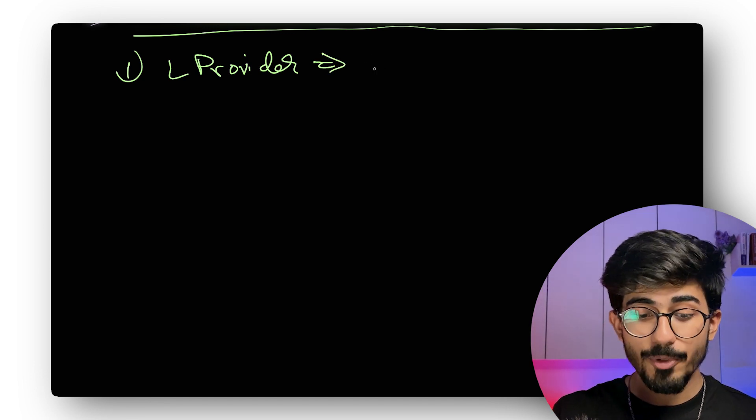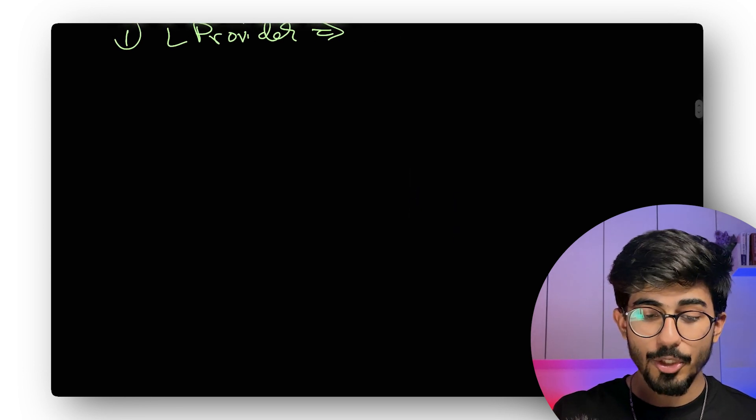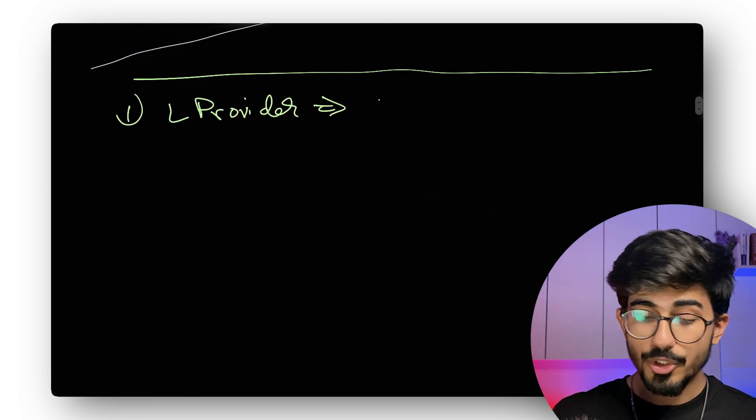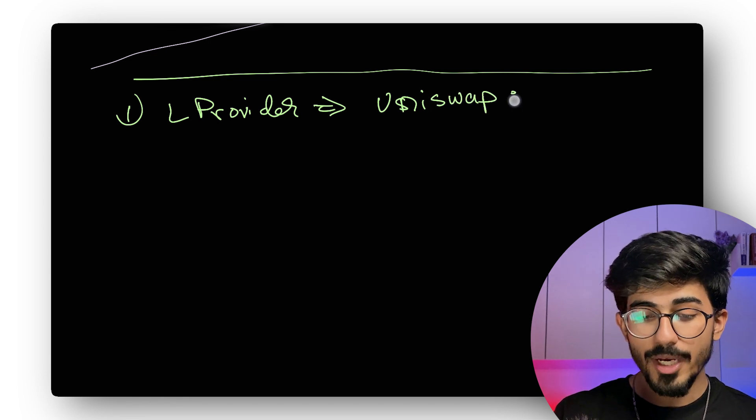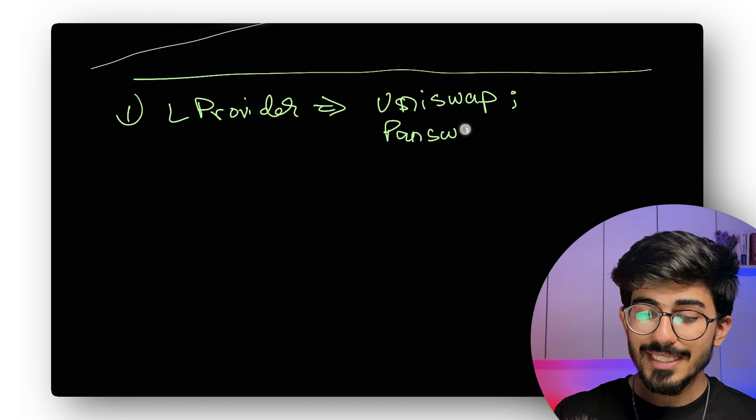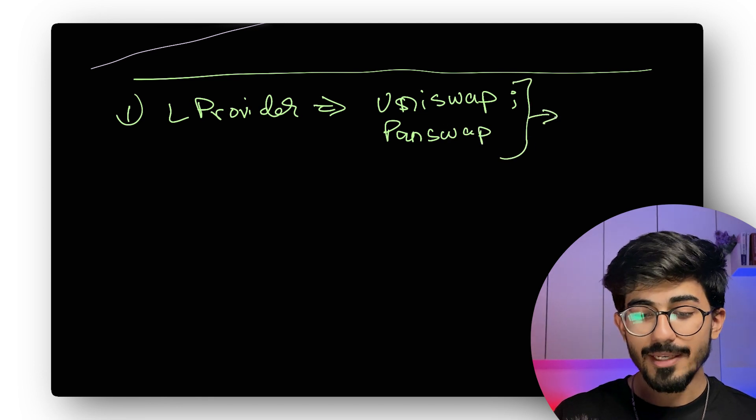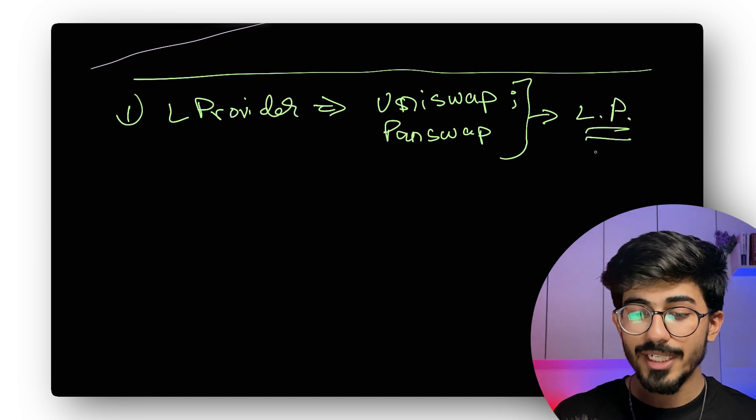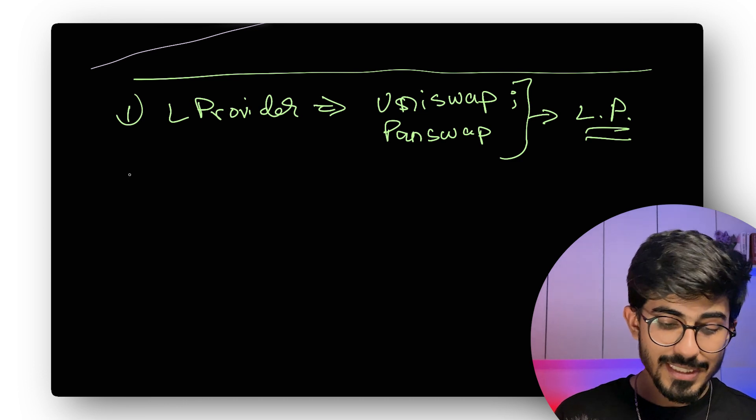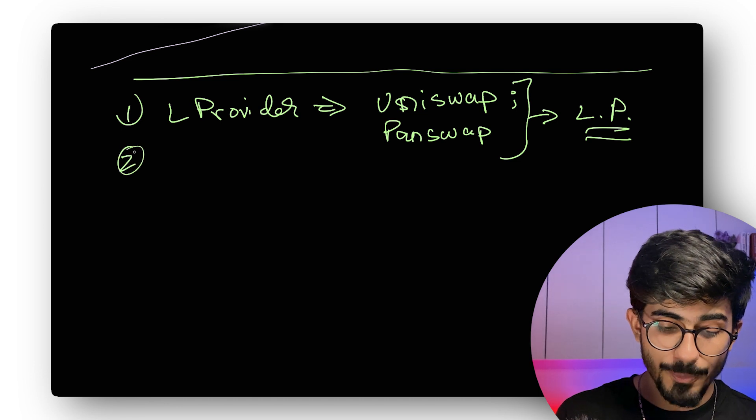You can become a liquidity provider by just going on to any of the DEXs. So some of the DEXs include Uniswap. Let me just write it down. You have Uniswap. You have PancakeSwap. Any of the decentralized exchanges, you can go over there and start being a liquidity provider. So that is how you will earn liquidity provider fees. And the second way in which you can start earning using these liquidity pools through arbitrage.